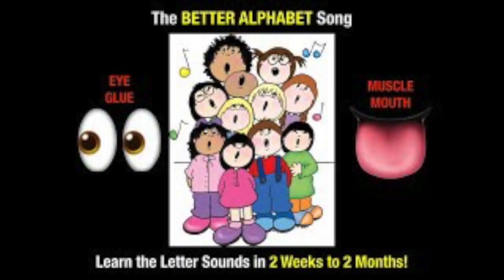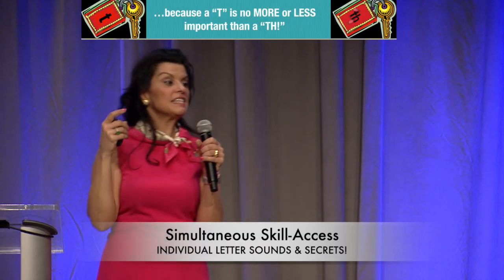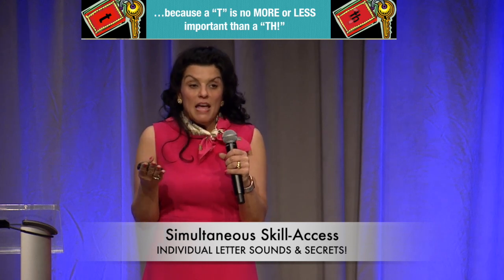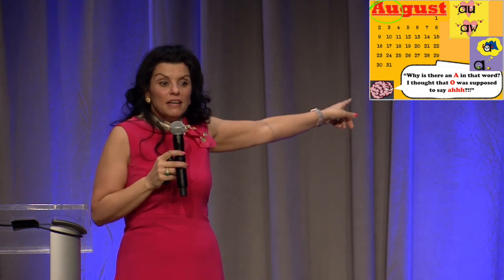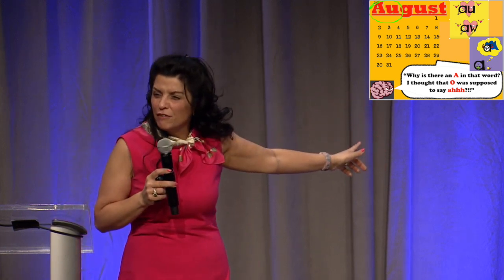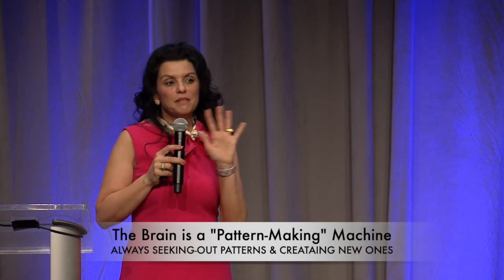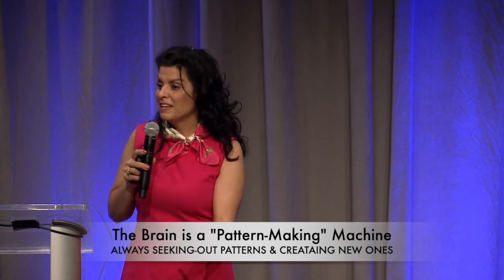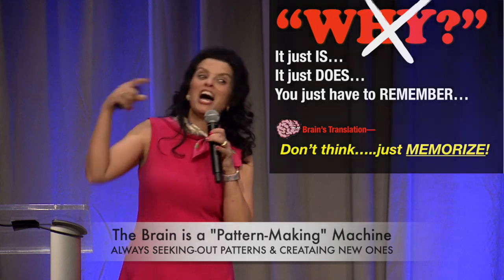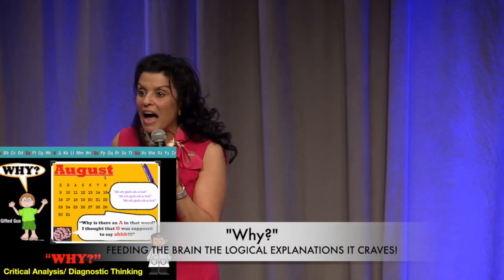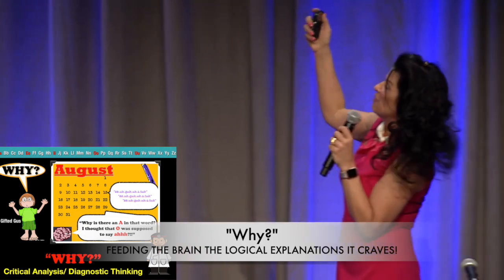Even while teaching the better alphabet — which takes two weeks to two months — you are simultaneously tossing out secrets. Because if a kid is paying any attention and you've just said 'A says ah' and then you march two feet to your calendar and show them the word August, you lose all credibility. They're thinking: 'Wait — isn't that the same A over here that's over here? Didn't she say it's supposed to say ah? And now she's making a sound she made for a different letter.' The brain is a pattern-making machine — it will pull a pattern. The problem is sometimes the pattern becomes 'there is no pattern; anything goes, so it doesn't even matter.' We want the opposite. We want kids to follow their nature — why, why, why — and we want to keep that analytical, diagnostic thinking going all day long.